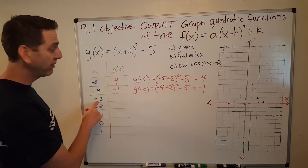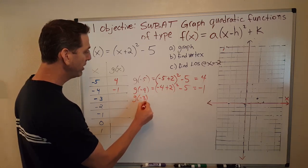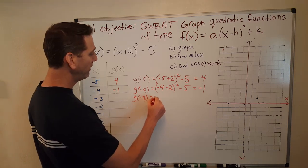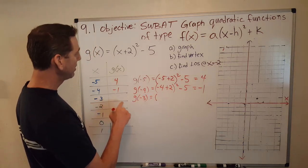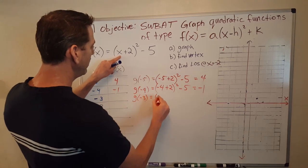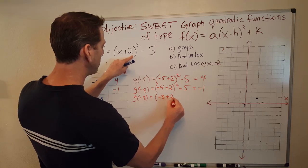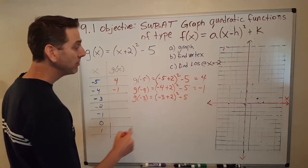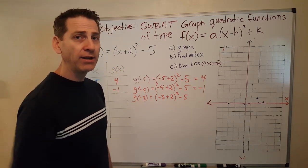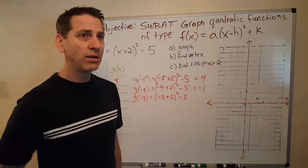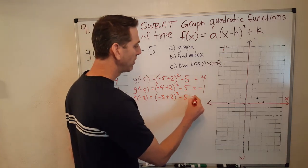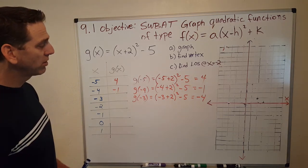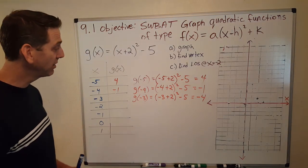How about an x equals negative 3? What's g of negative 3 going to be? Well, let's see. g of negative 3. So, everywhere I see an x, I'm going to put a negative 3. Alright, so negative 3 plus 2 to the second power minus 5. Okay, so negative 3 plus 2 is negative 1. Negative 1 squared is 1. 1 minus 5 is negative 4. Okay, let's do one more here. Then we should get the pattern.